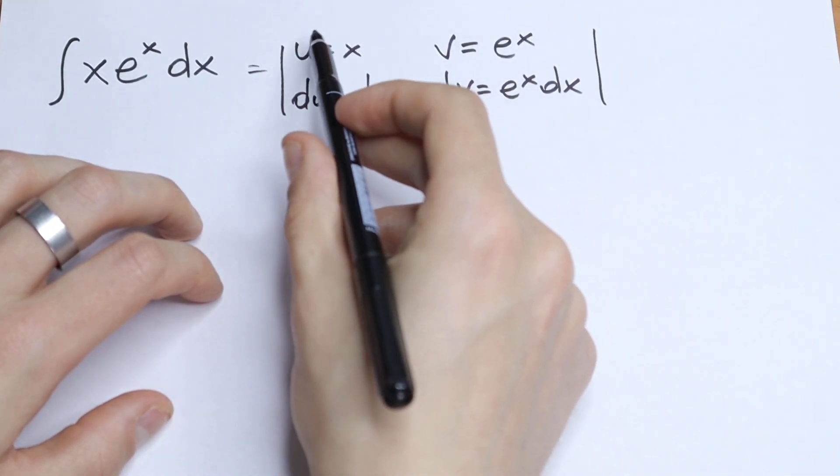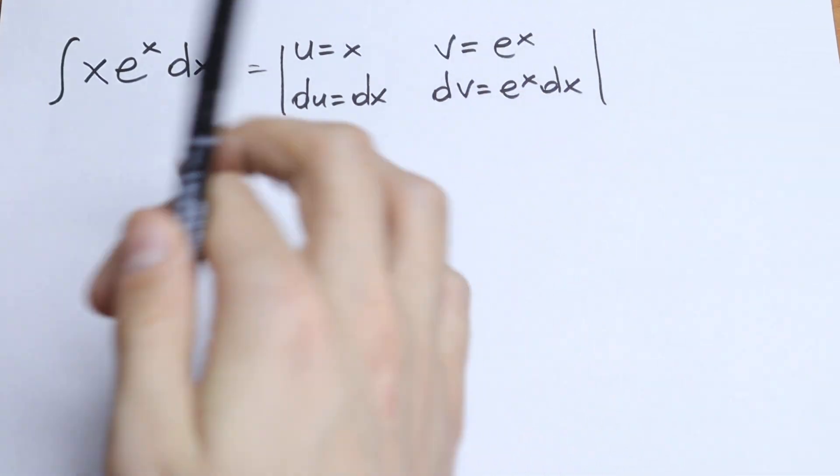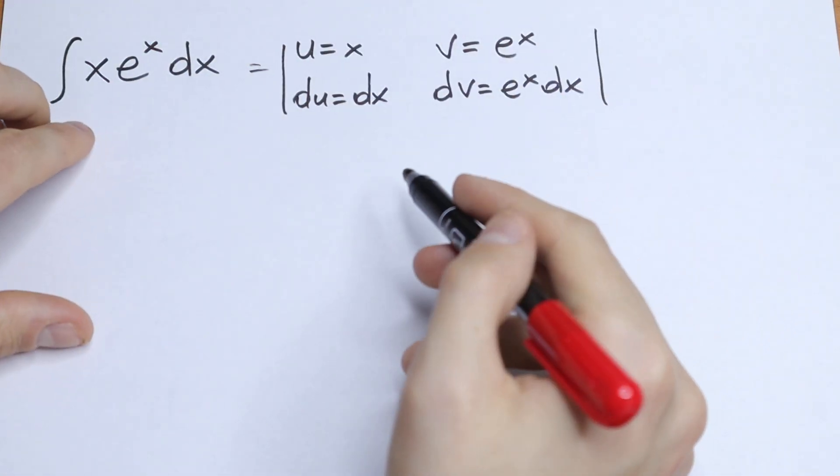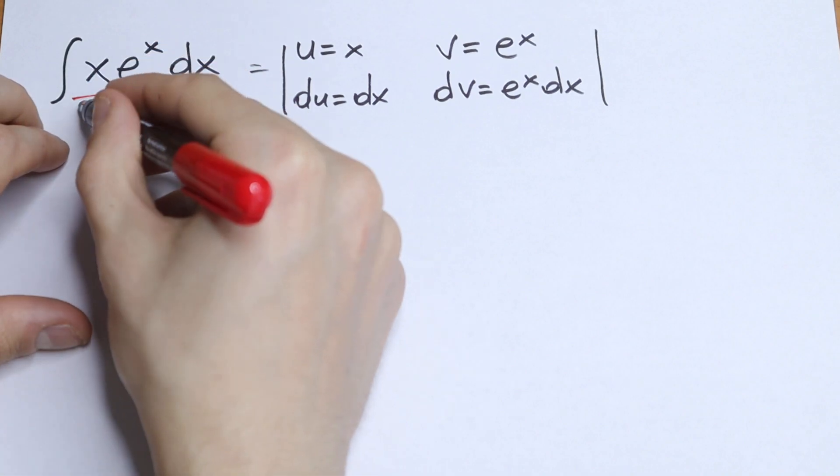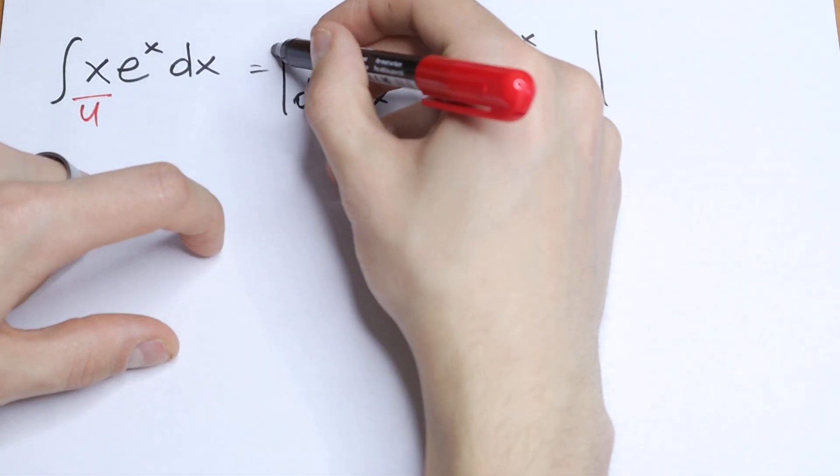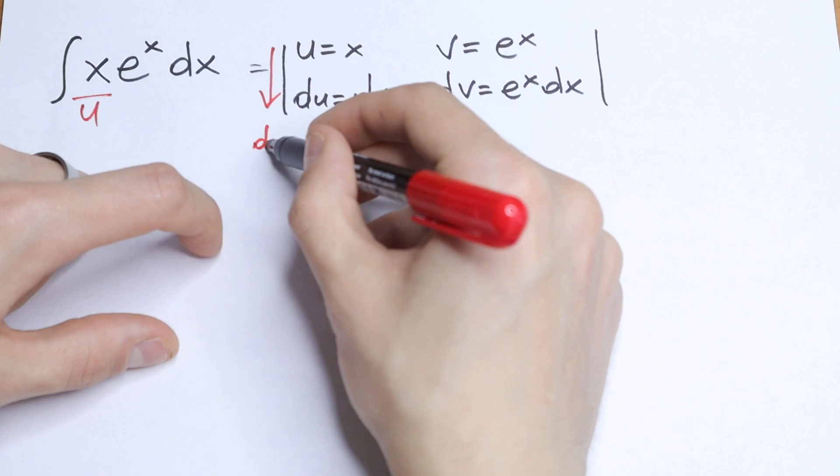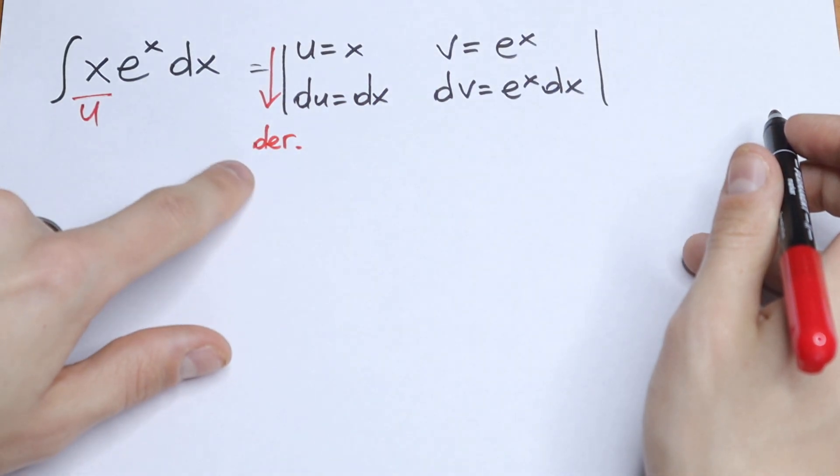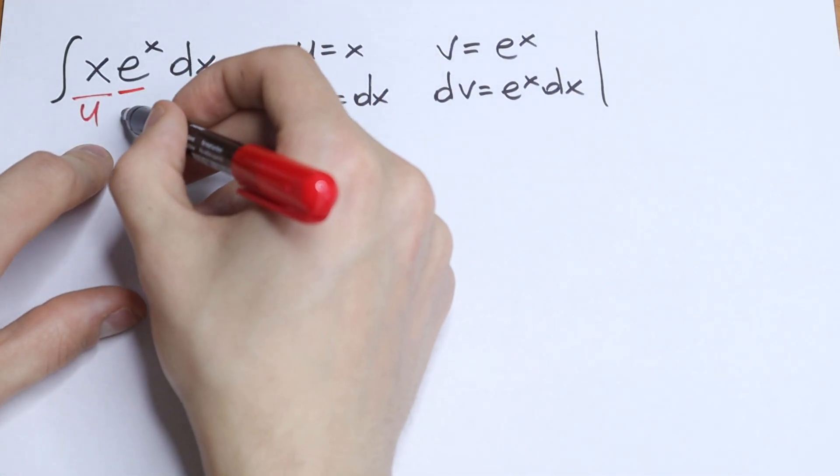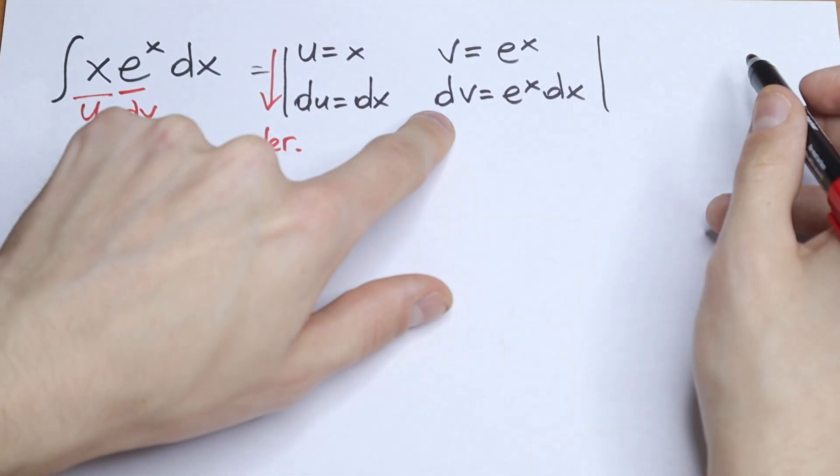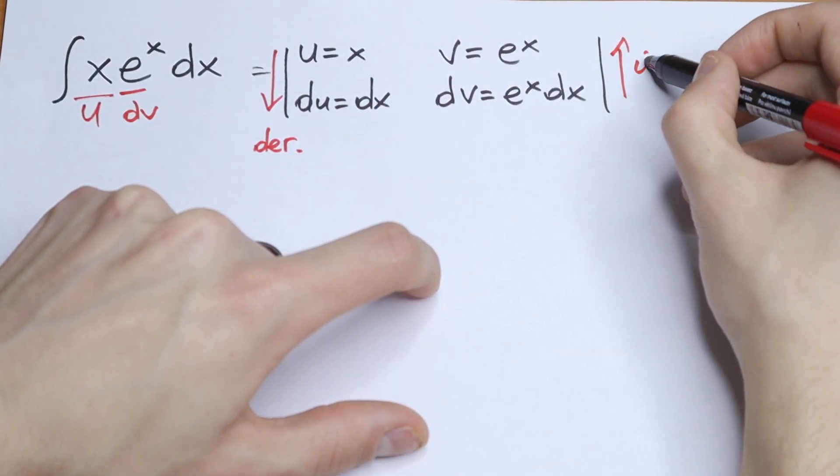So we write our parts. So we will have that x will be u, and we find our derivative. And e to the power x will be our dv, so we need to find v by finding our integral.